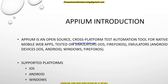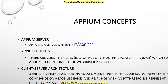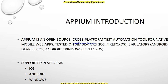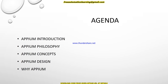Appium handles simulators, emulators, and we can also run our code on real devices, which is very useful. The platforms it supports: iOS, Android, Windows — which was recently combined with Appium — and Firefox OS. We can also do automation on these platforms.